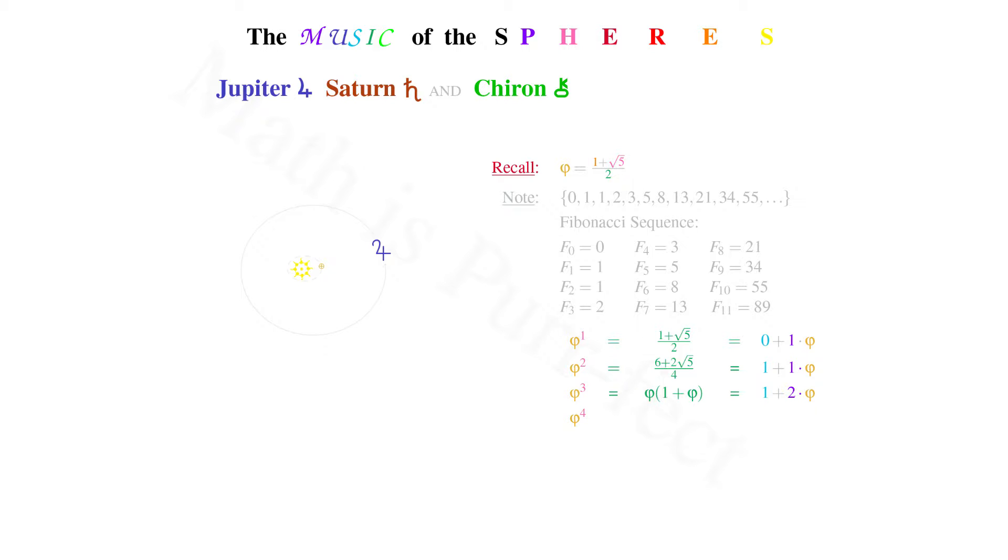Phi to the fourth is 2 + 3phi. Phi to the fifth yields 3 + 5phi. Phi to the sixth is 5 + 8phi, and phi to the seventh results in 8 + 13phi. We note that the constant terms in each power of phi, seen here in blue, are simply the Fibonacci numbers beginning with F₀. Whereas the coefficients of phi, seen here in purple, are also the Fibonacci sequence beginning with F₁. We can conclude that the nth power of phi is the sum of F_{n-1} and F_n times phi.